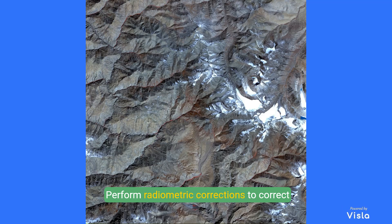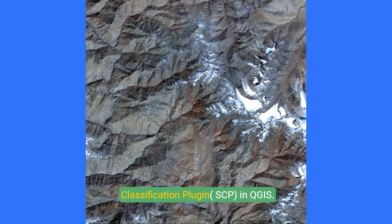Perform radiometric corrections to correct atmospheric interference using the Semi-Automatic Classification Plugin (SCP) in QGIS. This ensures the reflectance values are accurate.